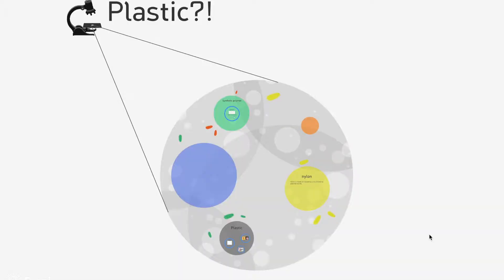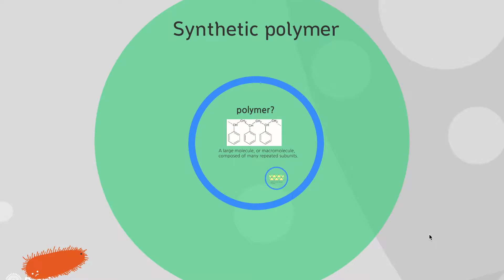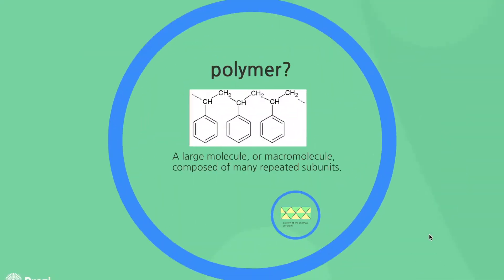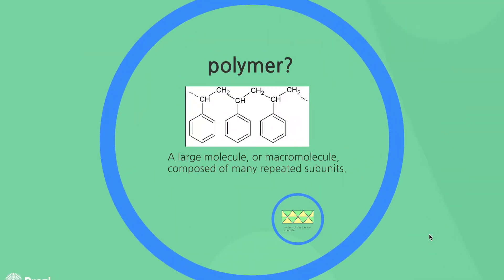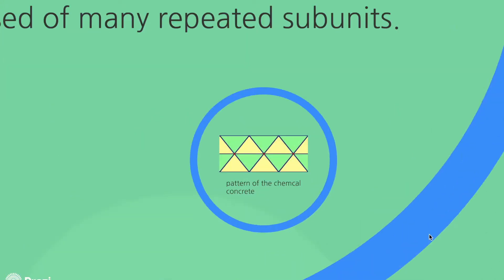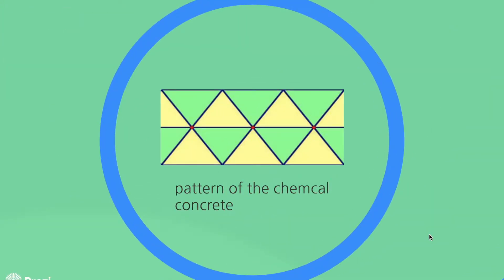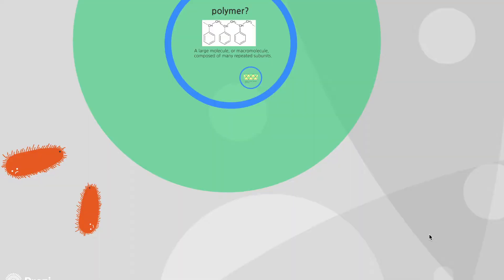It happens because of the characteristic of plastic. It is actually a synthetic polymer. What is a polymer? It is a large molecule or macromolecule composed of many lipid subunits. It looks like this pattern. It is actually a pattern of chemical bonds connected really tightly.